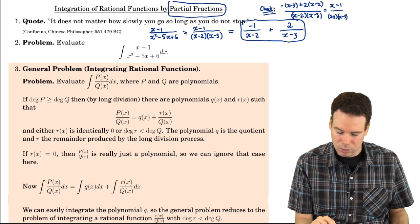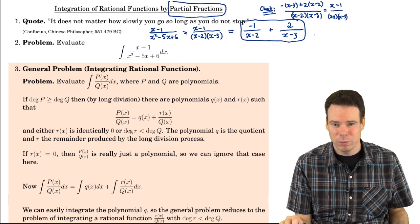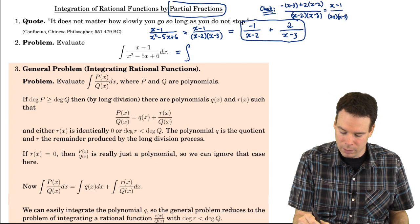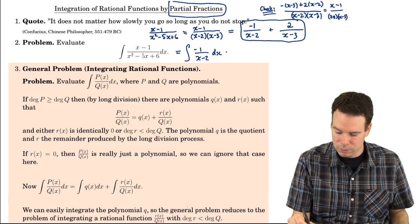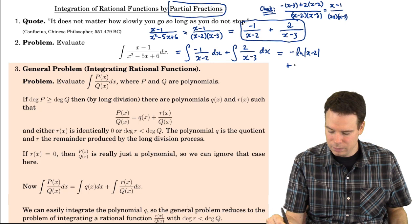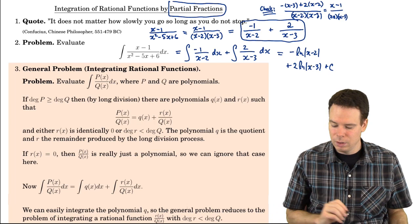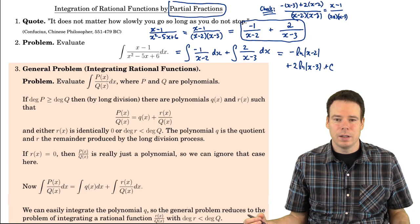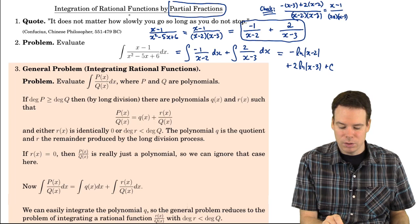Have we made progress? We've rewritten the original integrand as the sum of two simpler rational functions, simpler in the sense that they're easier to integrate. We can now work out the integral by working out the individual integrals. The first gives a logarithm of |x minus 2|, and the second gives twice the logarithm of |x minus 3|, plus a constant of integration. That's the method of partial fractions.